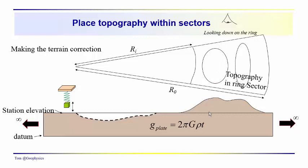And then we make a correction based on the calculated influence of this sector on the observation made at this particular station location.